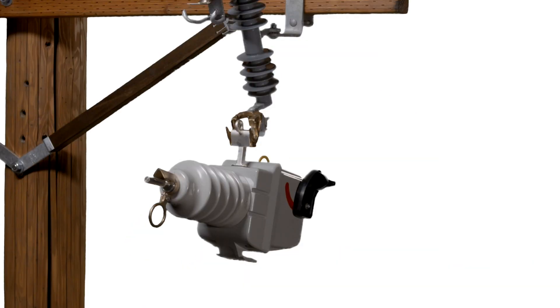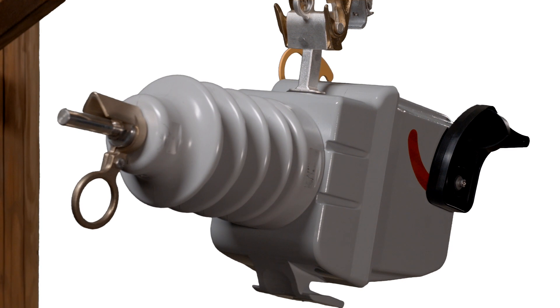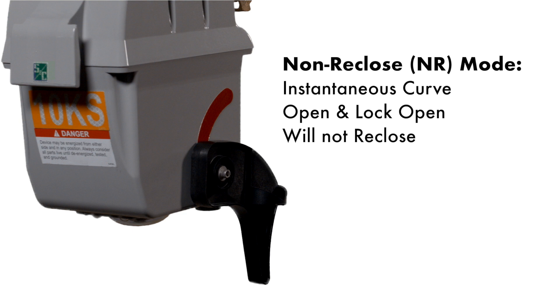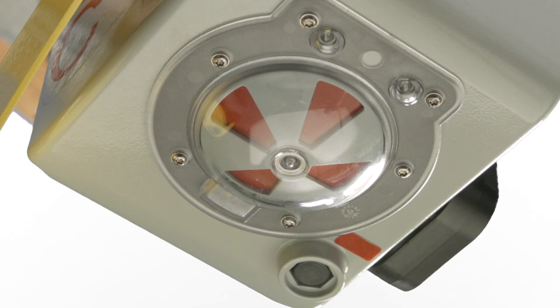The mode selector lever can be in the up or down position depending on the desired behavior of the VacuFuse Interrupter after closing, and its exact function will be discussed later in this video. Regardless of the position of the mode selector lever, the interrupter will operate in non-reclose NR mode for the first 10 seconds after closing and energizing. Non-reclose mode uses the instantaneous version of the interrupter's TCC curve. If a fault is present on the line within the first 10 seconds, the interrupter will open and lock open.